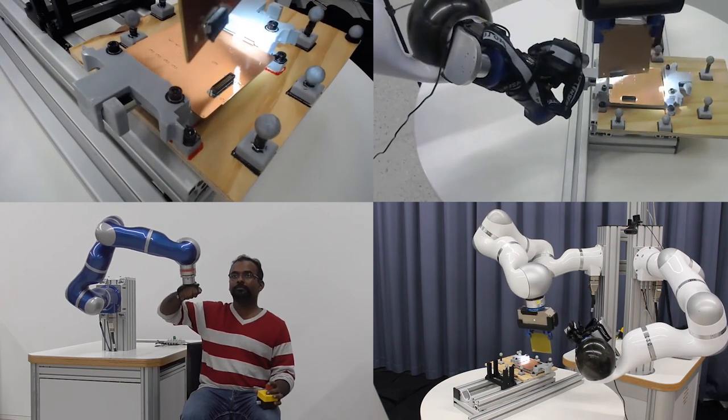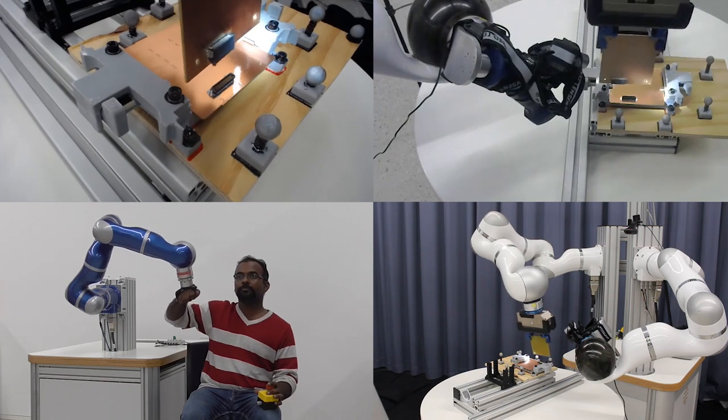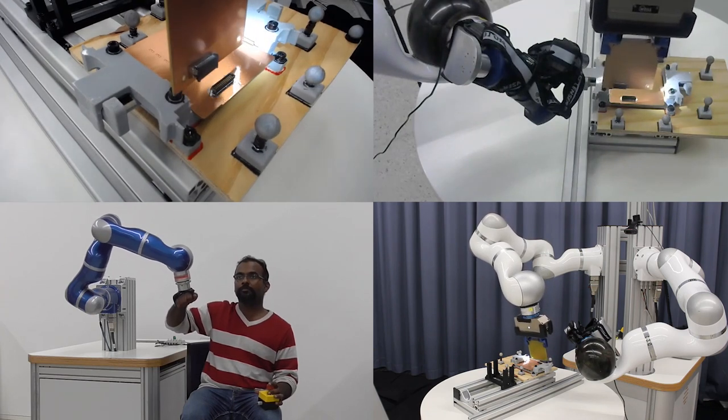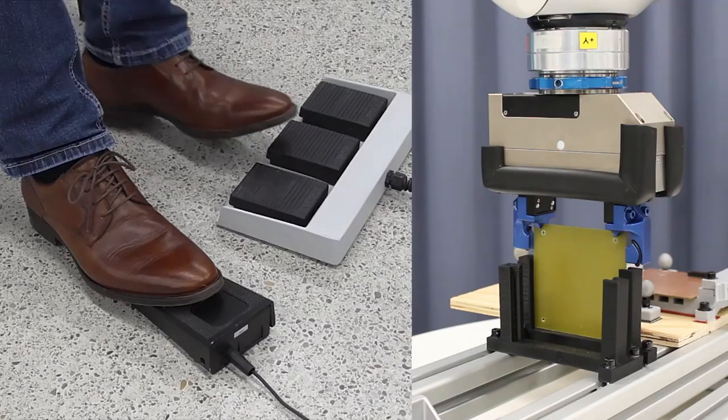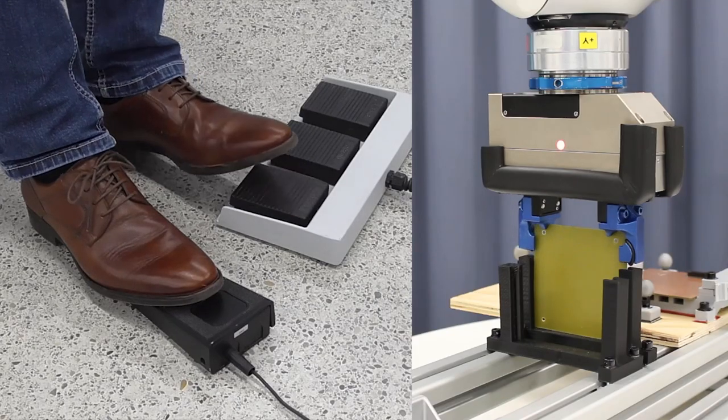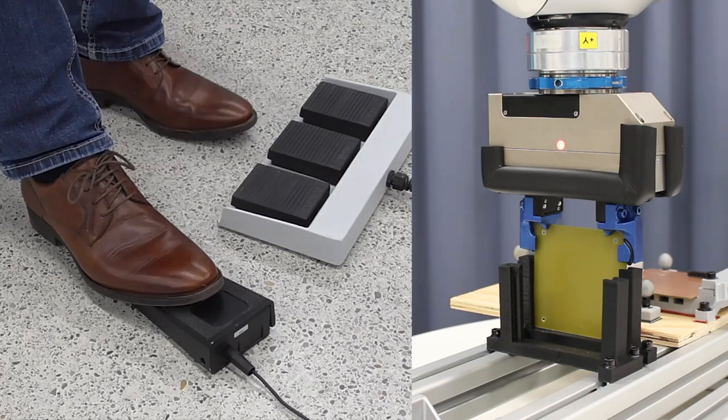The robot tracks the movements of the operator and the operator feels the forces when the robot interacts with its environment. The human operator also has control over the gripper via foot pedals.